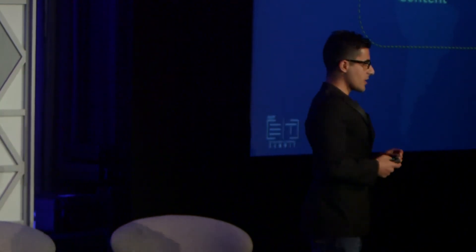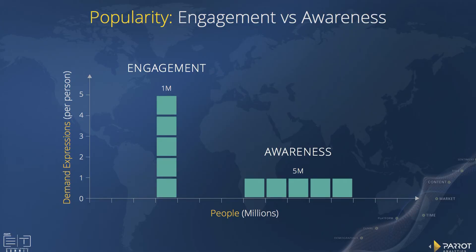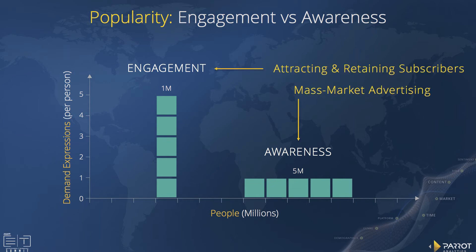I want to leave you with a couple of questions — more questions than answers — about this new world and what it means for something to be popular. If you had five million people each expressing one expression of demand for a TV show, and one million people each expressing five times that for another TV show, are both TV shows equally as popular? Again, it depends who you ask. For an SVOD platform targeting that one million people for subscriber attraction and retention, that's really what's important. If you want passive mass-market advertising, then you really want to hit the five million people show.